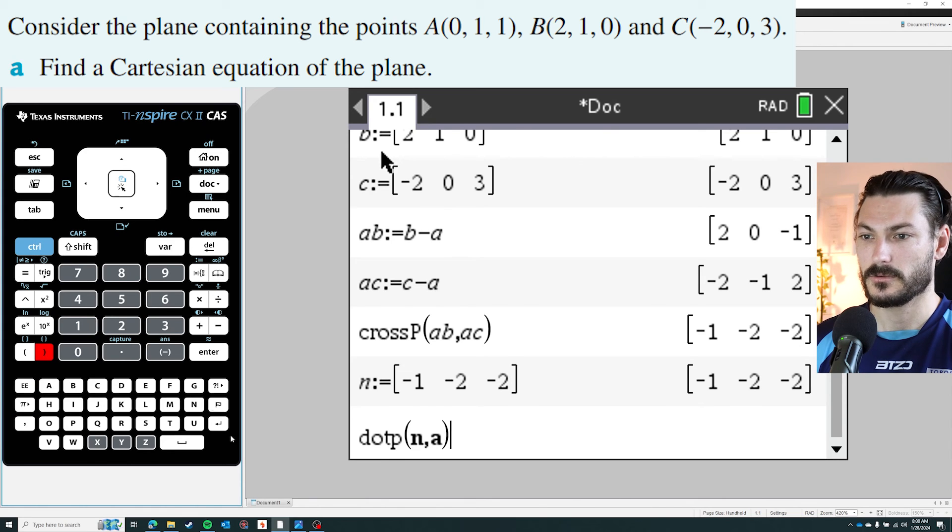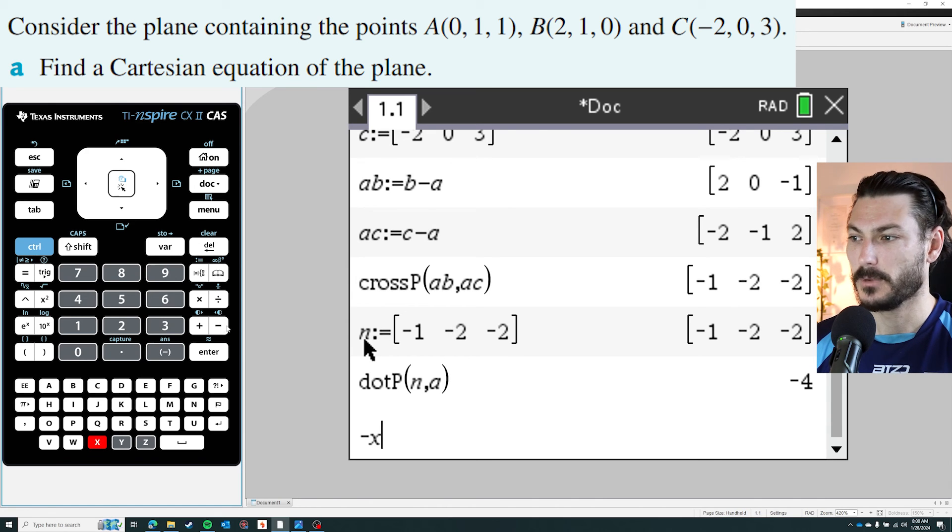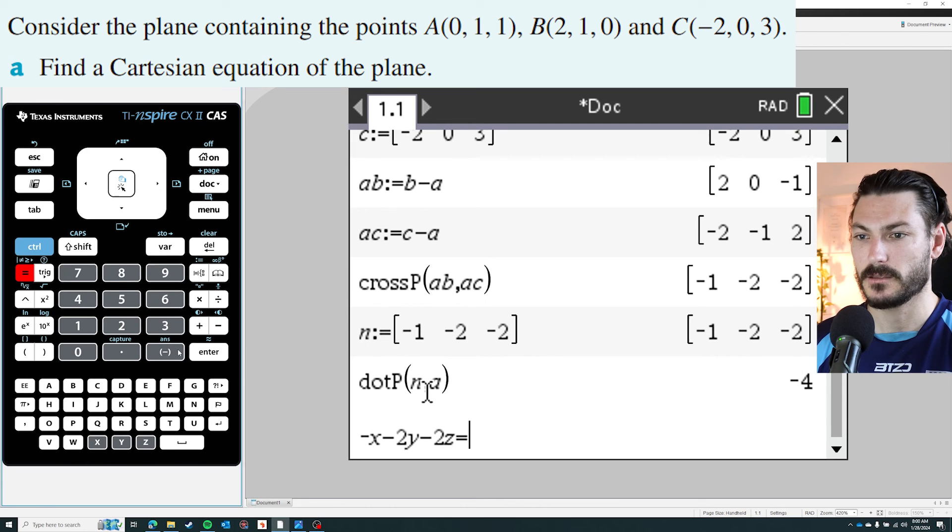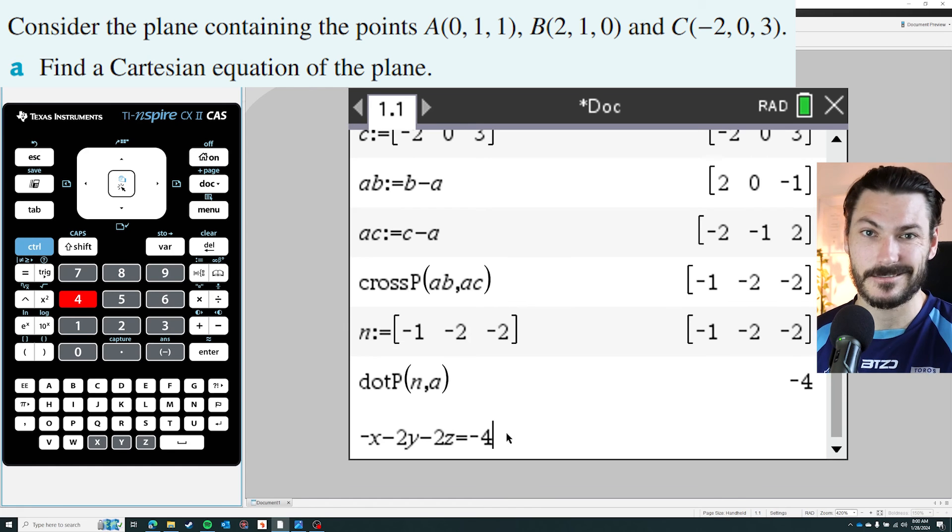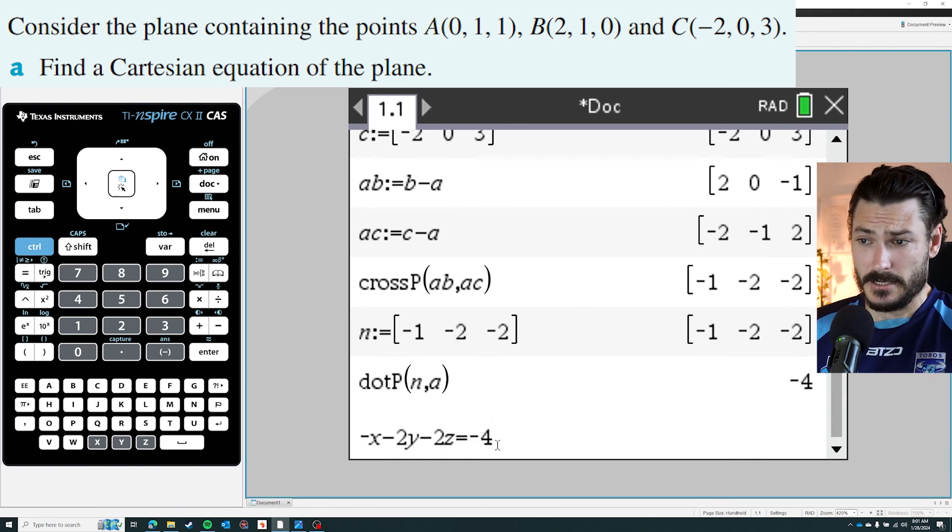And I get negative four. So therefore my entire Cartesian equation of the plane is the normal with x, y, and z's after them, so negative x minus 2y minus 2z, and that's going to be equal to this negative four here. Alternatively you could multiply the entire thing by negative one and have x plus 2y plus 2z equals positive four. It doesn't really matter. That's the equation of my plane.